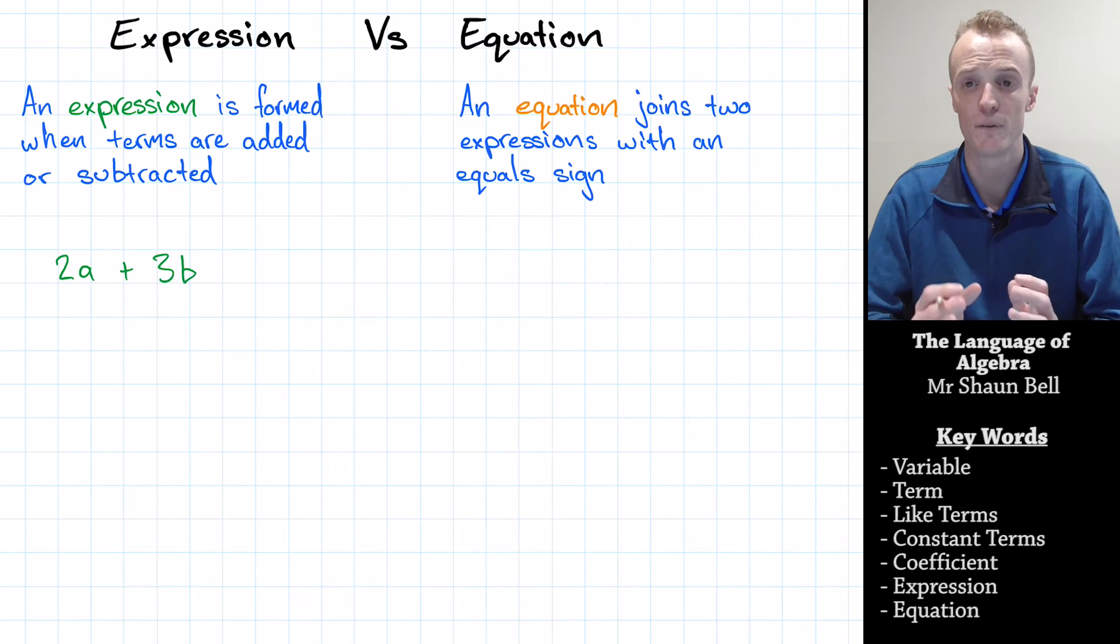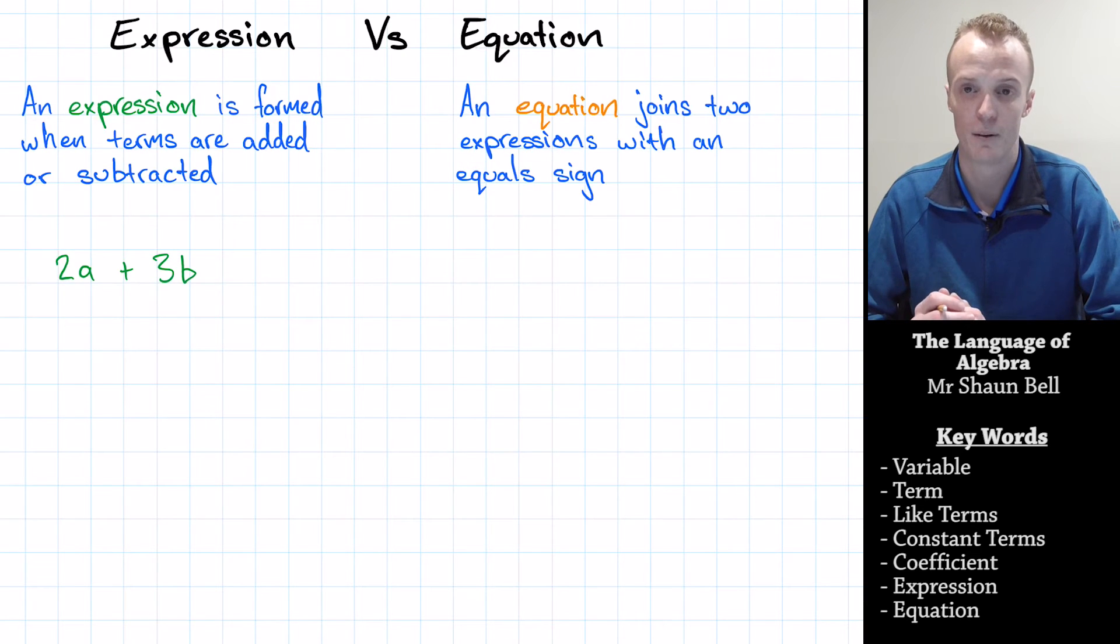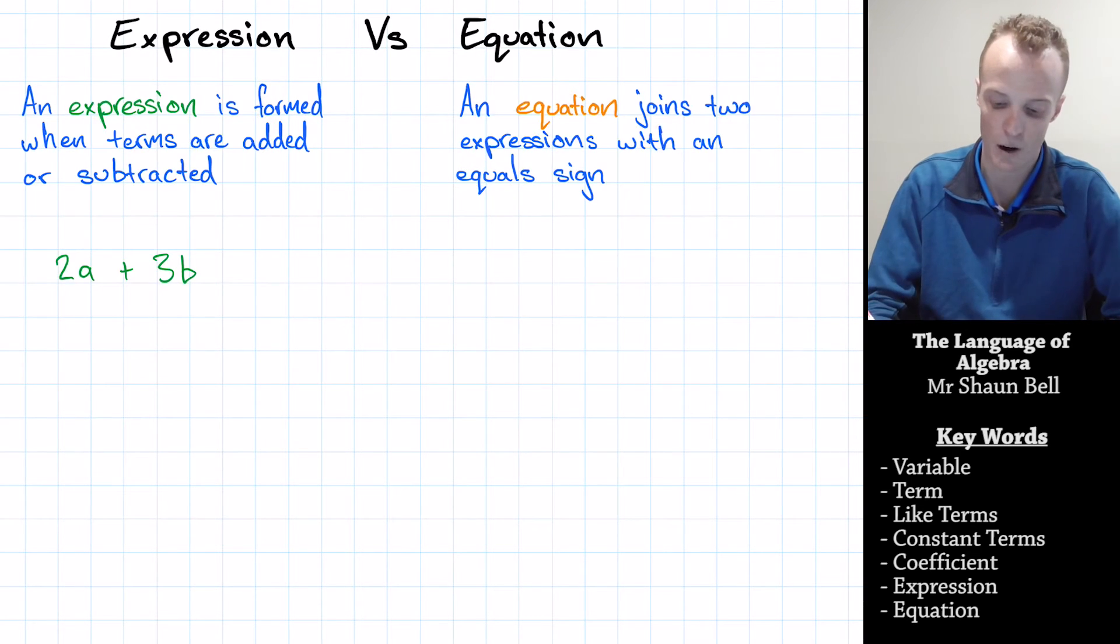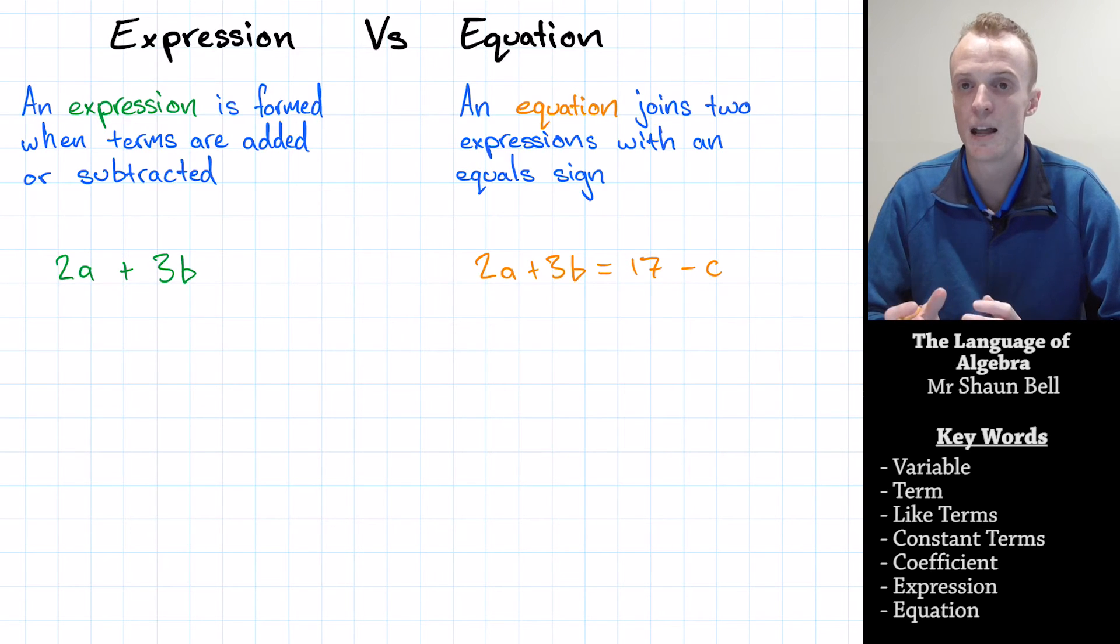Now, an equation is different from an expression because it joins two expressions together with an equal sign. So an example of an equation might be 2a plus 3b equals 17 takes c. So now I've got two separate expressions here that have been joined together by an equal sign, and we call these equations.